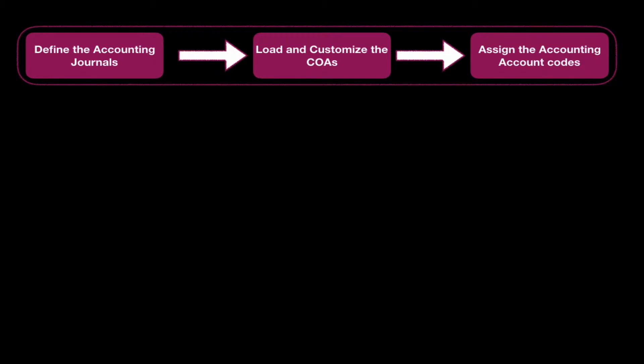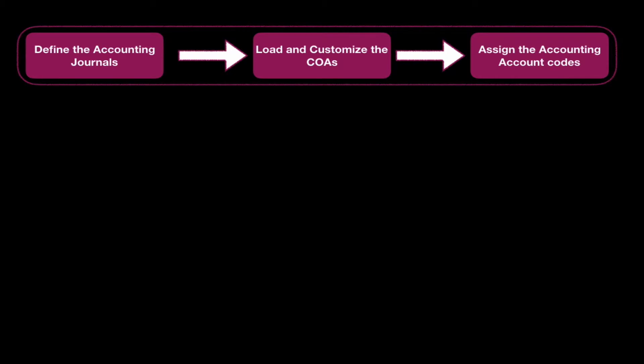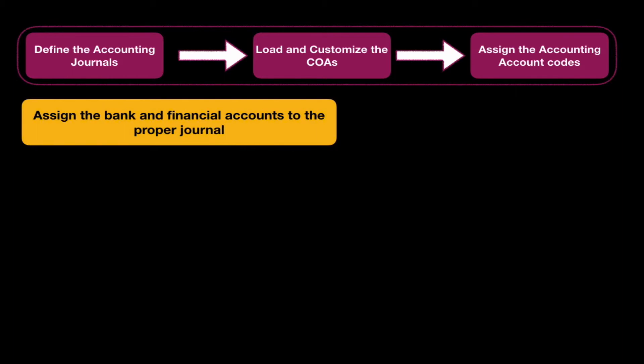The next step is to assign your bank accounts and financial accounts to the proper accounting journal. For example, the cash financial accounts need to be assigned to the sales journal. As we saw in the previous lessons when we created the bank accounts and how to modify them.